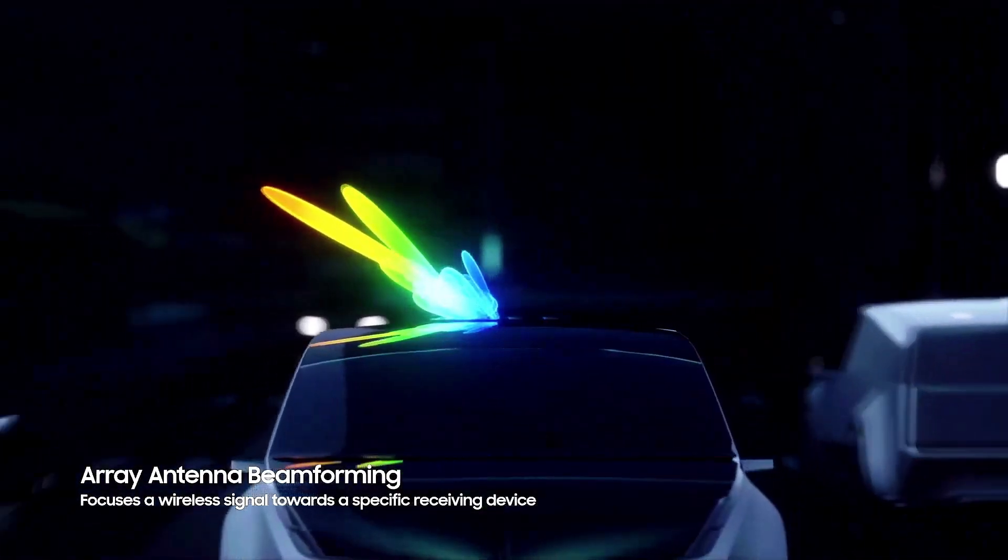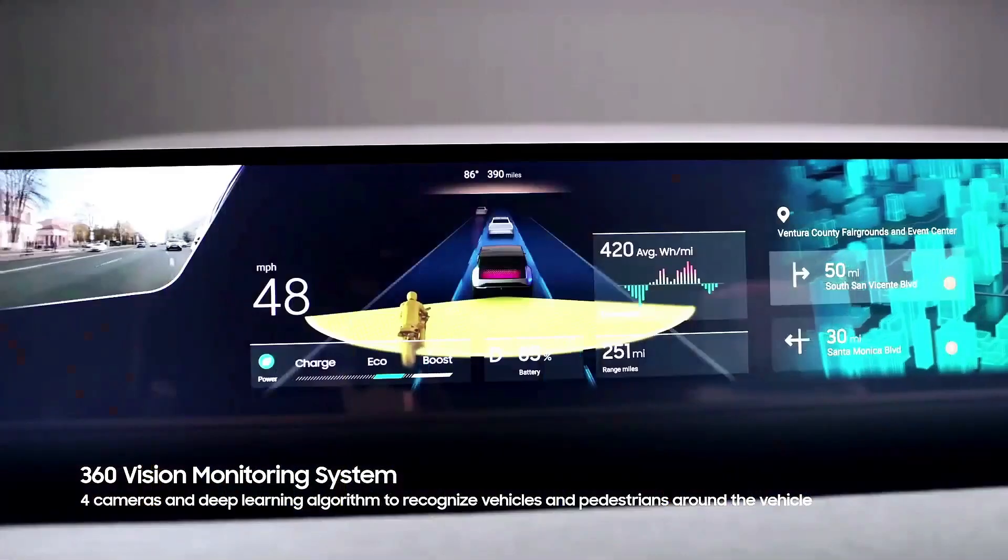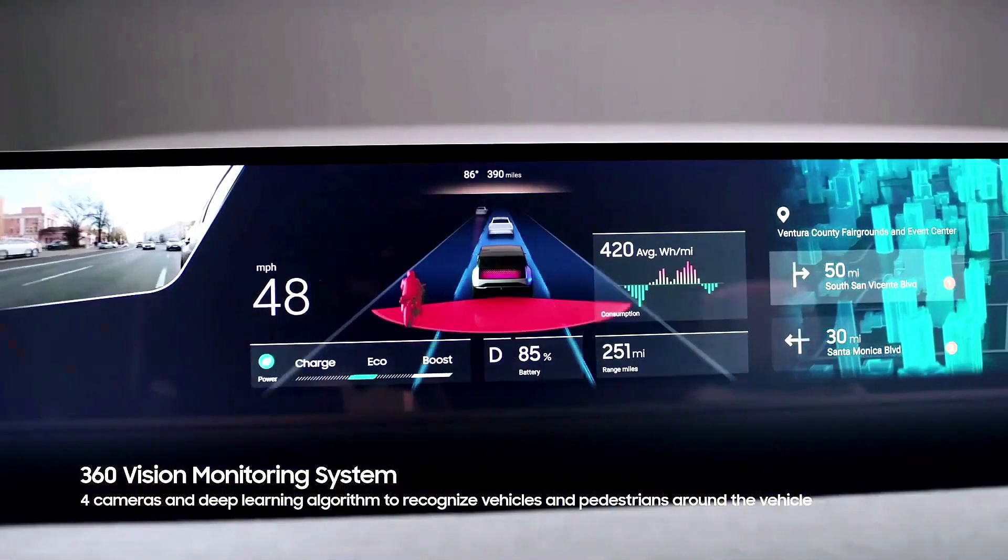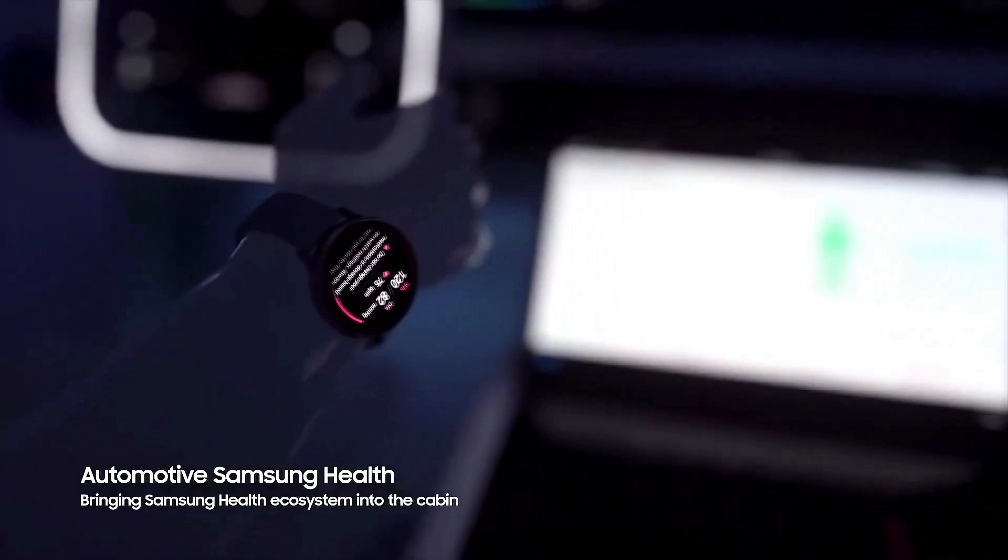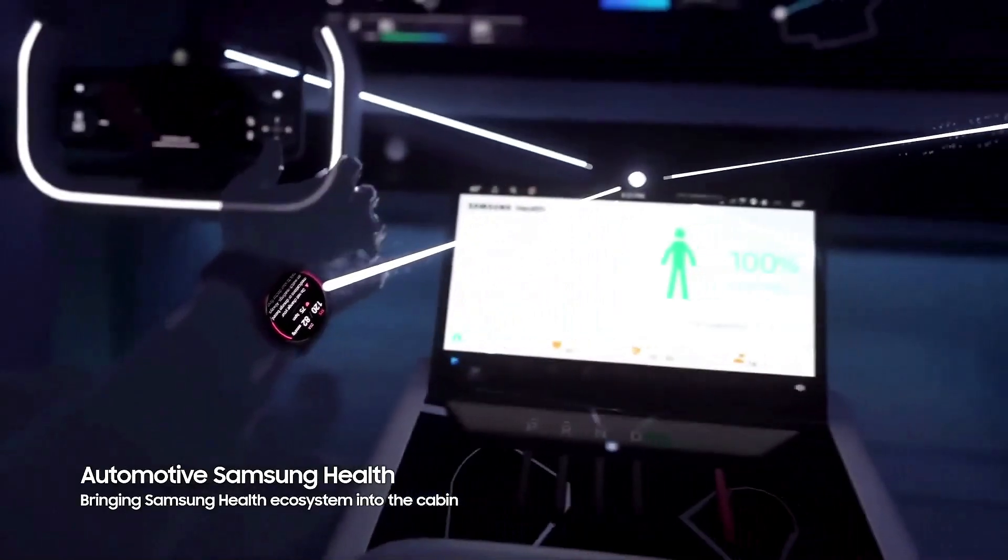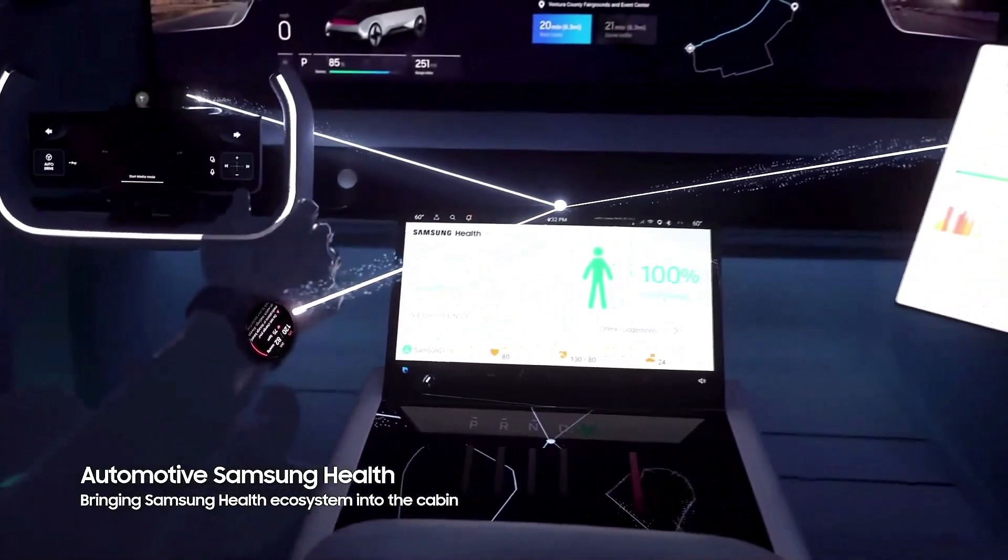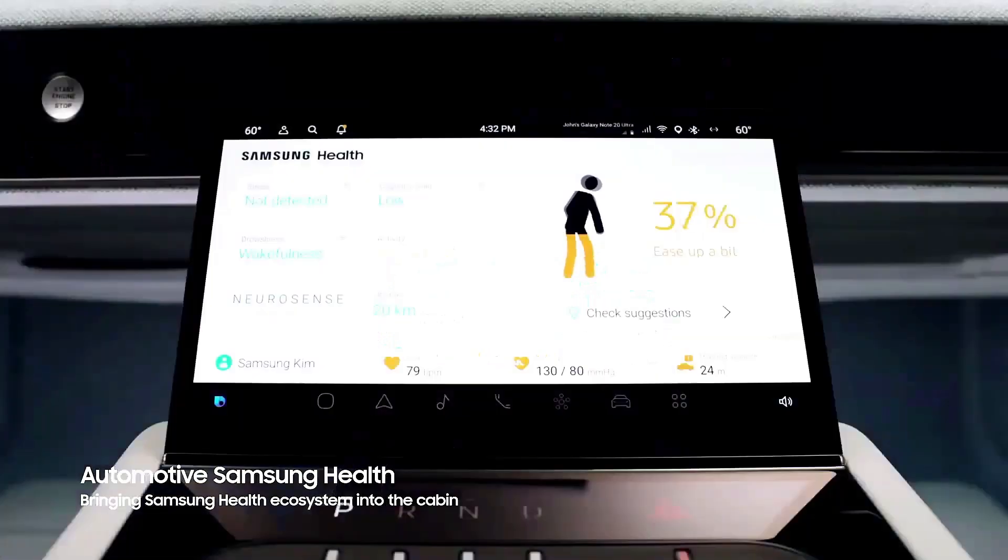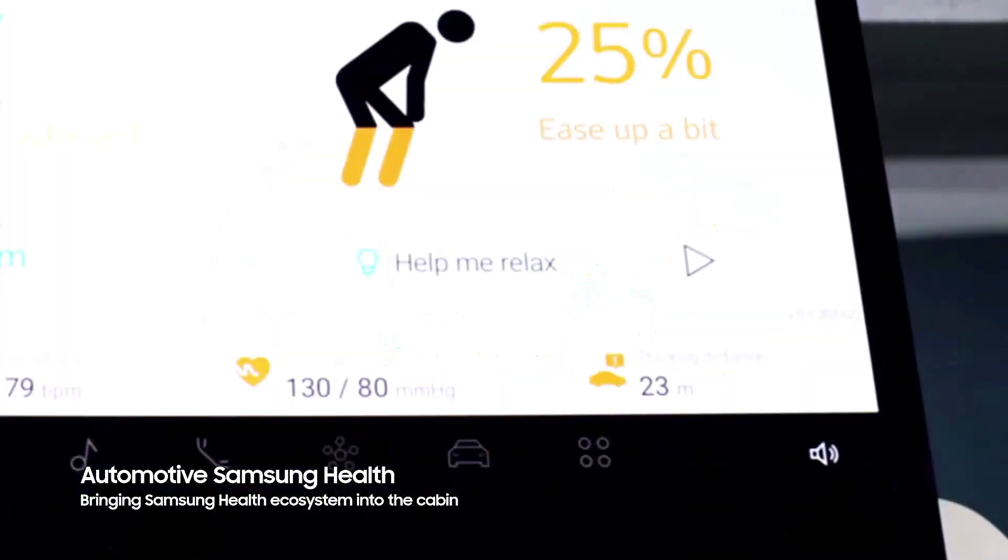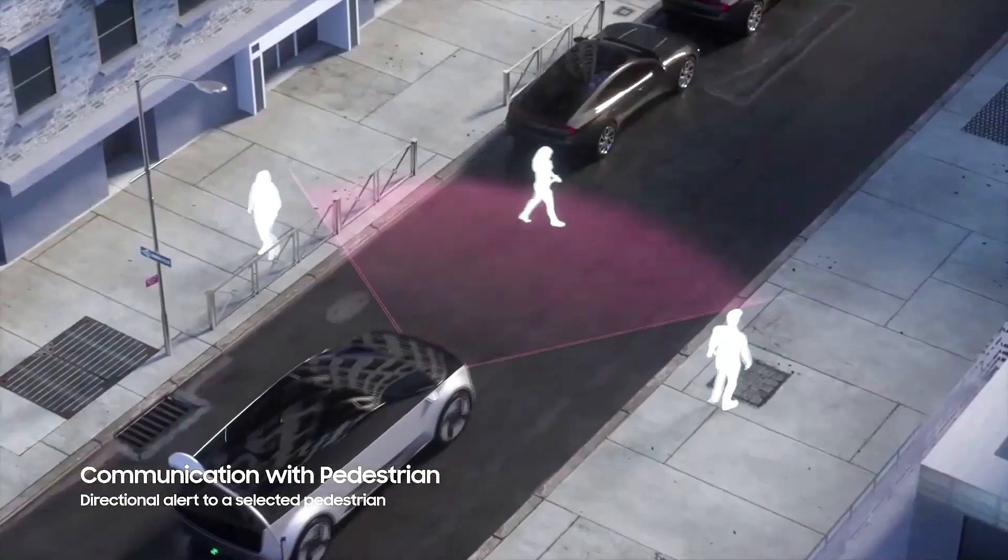The giant dashboard display inside the car is powered by a QLED panel, while an OLED panel powers the center console. There is also a display outside the car on the front grille that shows alerts to pedestrians, and it is powered by a micro-LED panel.